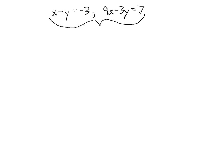It doesn't really matter which variable we target. We can multiply equation 1 by minus 3, which gives plus 3y here to cancel the minus 3y there. We could also multiply equation 1 by negative 9 to get minus 9x to cancel positive 9x, or by positive 9 to get matching 9x coefficients and subtract. There are multiple valid approaches, but let's avoid fractions and use minus 3.